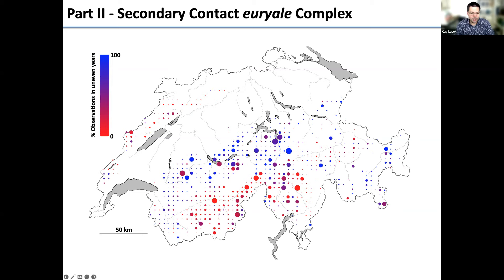To conclude: zones of secondary contact are common and very narrow — surprisingly so for organisms that can fly — and therefore allow us to study the late stages of speciation. Things are already strongly differentiated but not yet complete: the species cannot fully coexist.